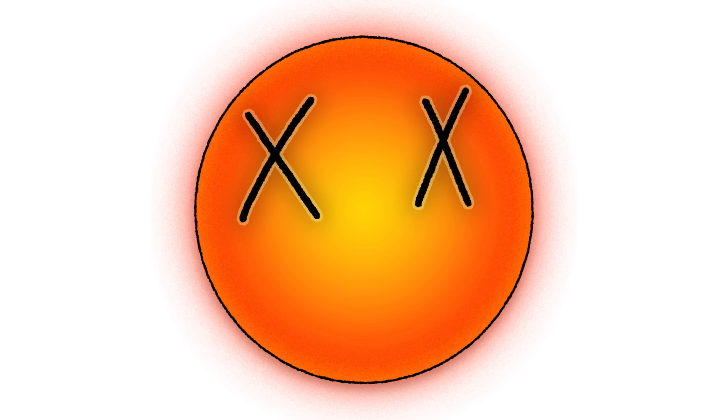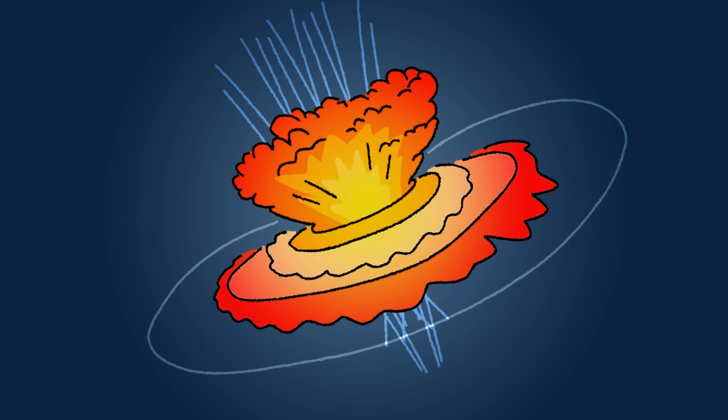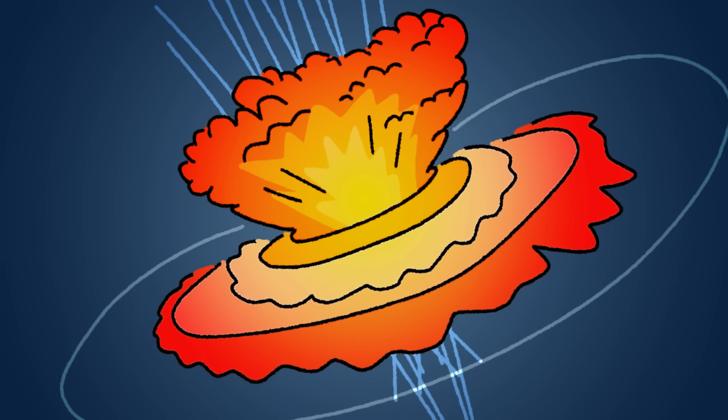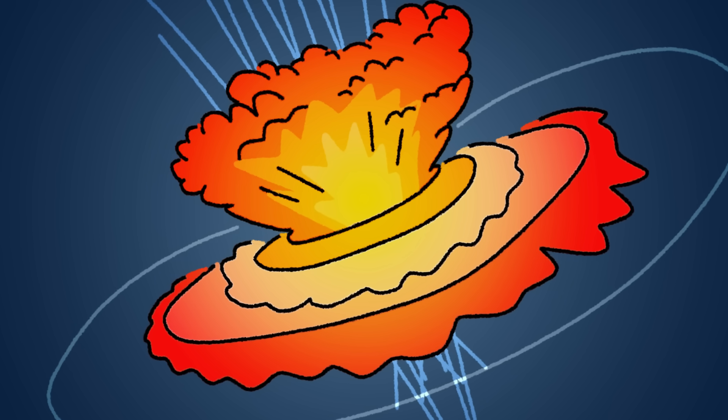V.Y. Canis Majoris is a dying giant, burning through fuel at an insane rate. In just a few million years, it'll collapse in one of the most powerful supernovas in the galaxy, obliterating everything around it. Swapping our sun for this monster? We wouldn't just be doomed, we'd be erased.